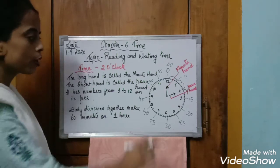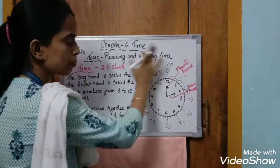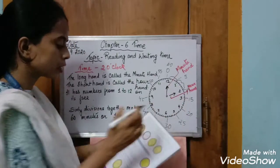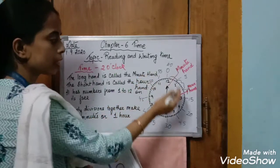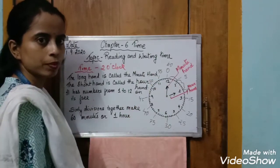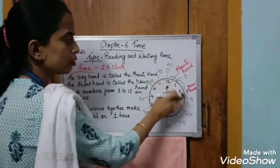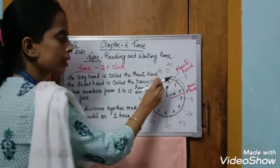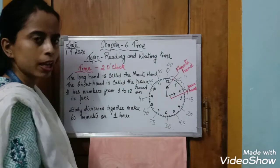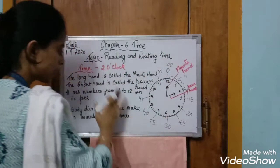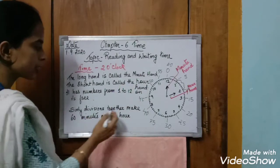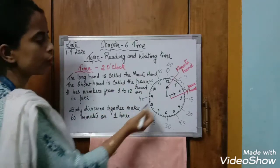How many parts is the clock divided into? In the dial of the clock there are 12 parts. Between two consecutive numbers there are four lines, and those lines represent minutes. Together there are 60 divisions, and those 60 divisions together make 60 minutes or one hour.